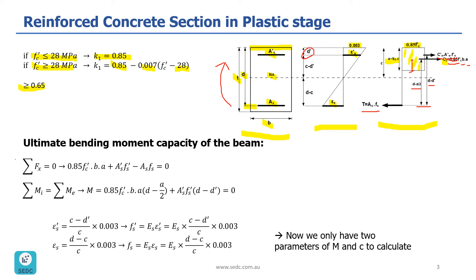For this, we need to look at our basic equilibrium formulas. The first formula is sigma F_x equals 0, which means the summation of all forces in our section equals zero, since we have no external axial force. So: C_c plus A prime s times f prime s minus A_s times f_s equals 0, where C_c is the force in concrete, A prime s times f prime s is C prime s, and A_s times f_s is T, which is subtracted because it acts in the opposite direction.